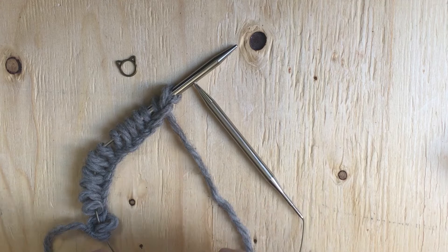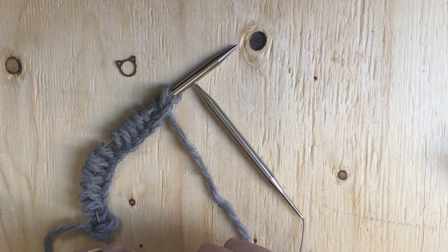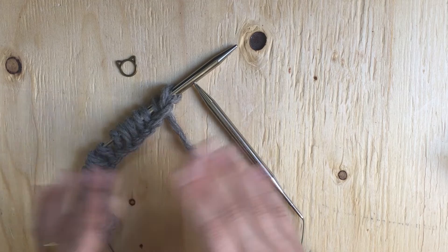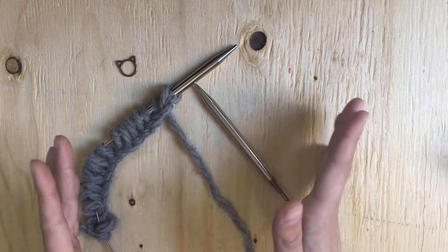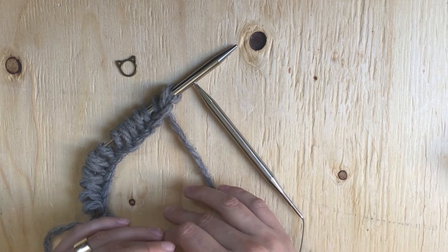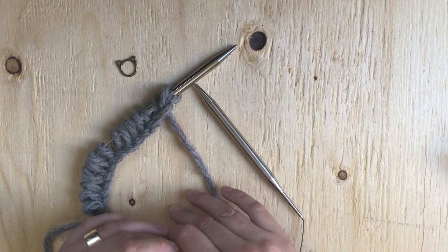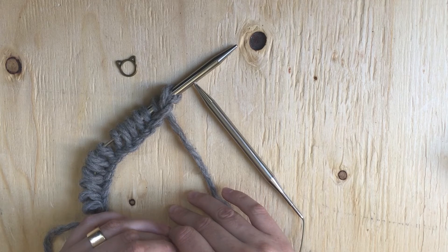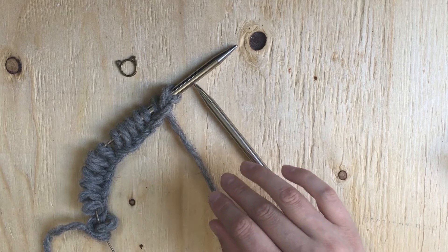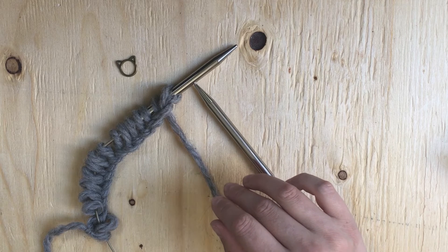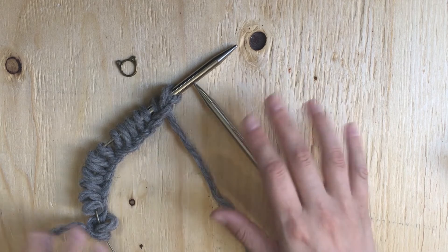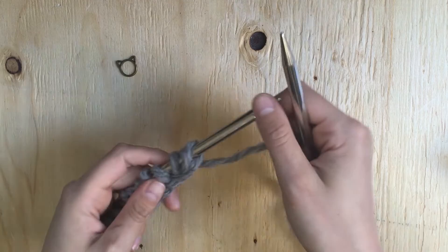Commonly it is abbreviated as PM for place marker. Marker itself just by itself is M. There can be remove marker, RM, slip marker, SM. All these terms should be included in your pattern. They may be a little bit different but they should all be included.